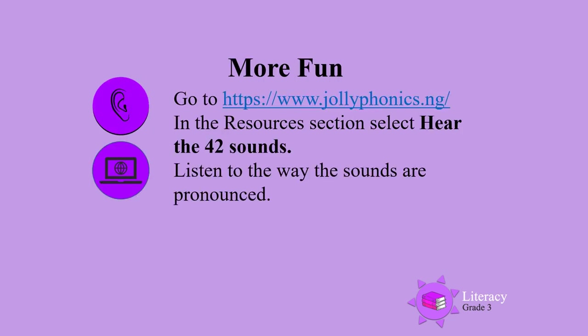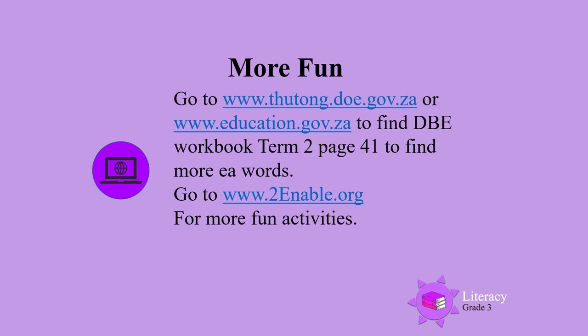For more fun, go to the Jolly Phonics website and in the resources section, select 'Hear the 42 Sounds' — then you can listen to the way the sounds are pronounced. You can also go to the DBE website and find the DBE workbook term 2, page 41, to find more EA words — words that have the two letters E and A that say E.